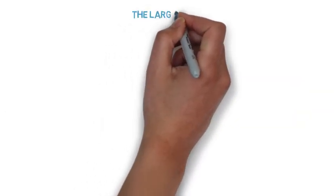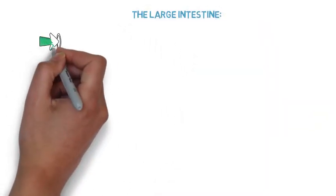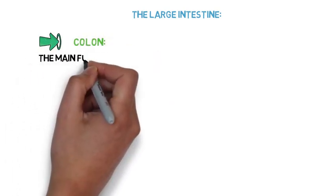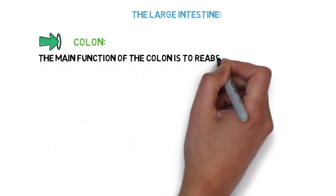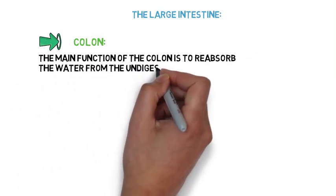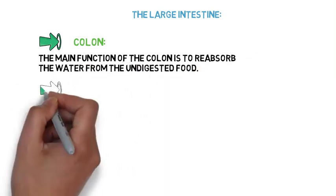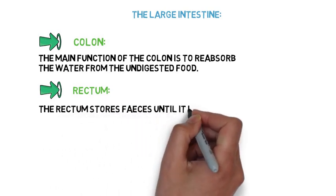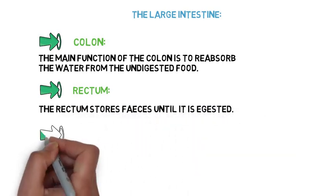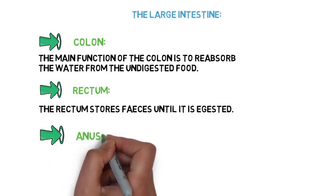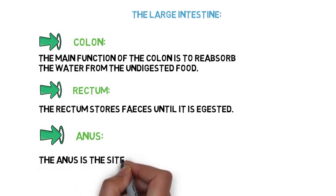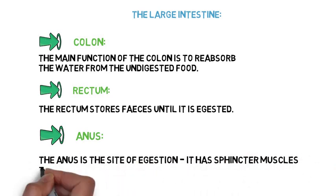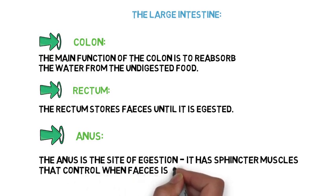Large intestine. The main function of the colon is to reabsorb the water from the undigested food. The rectum stores faeces until it is egested. The anus is the site of egestion and has sphincter muscles that control when faeces is egested from the body.